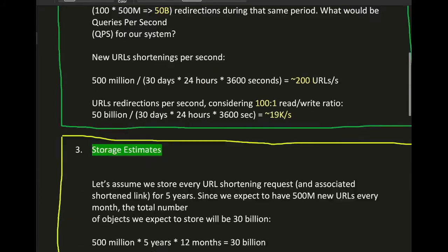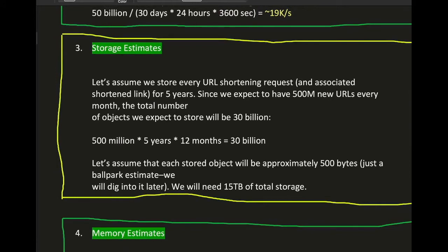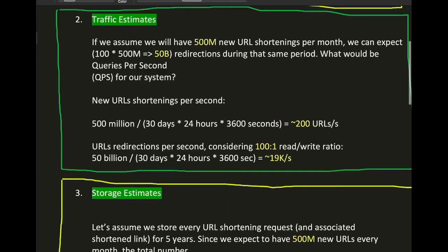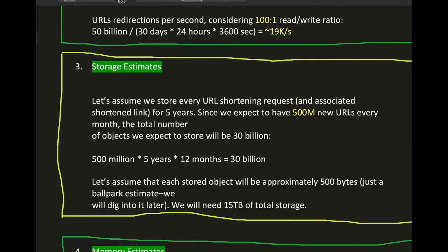For storage estimation, assuming we keep every URL for five years and have 500 million new URLs per month, we'll have approximately 30 billion URLs in five years. If each URL record uses roughly 500 bytes, we'll need about 15 TB of total storage. This can fit in a single large system.